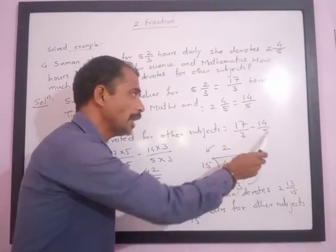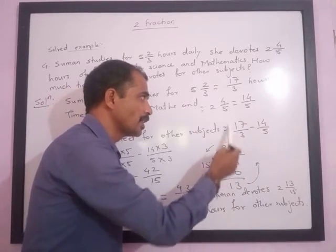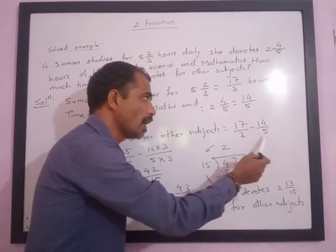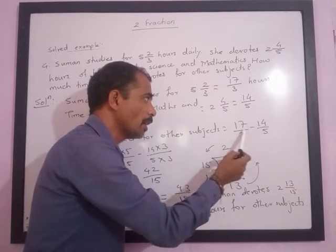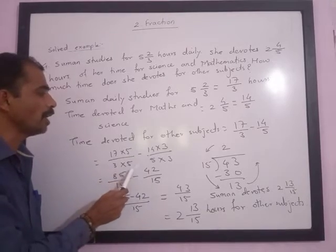To make the denominator same, since these are co-prime numbers, we have to multiply this fraction by this denominator and the other fraction by this denominator. So we will get 17 multiplied by 5 upon 3 multiplied by 5, minus 14 multiplied by 3 upon 5 multiplied by 3.